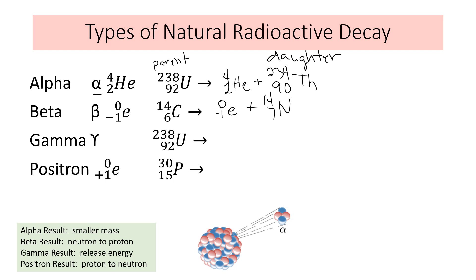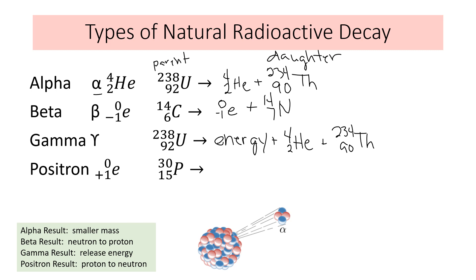Gamma decay is just energy — it has no math, it's only energy. A gamma is high-energy radiation and often happens alongside other decay types. For example, uranium-238 gives off energy as well as the 4-2 helium and 234-90 thorium. So this reaction shows both alpha and gamma. The point of gamma is to release excess energy.